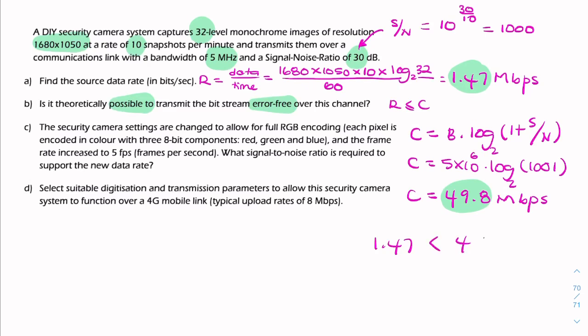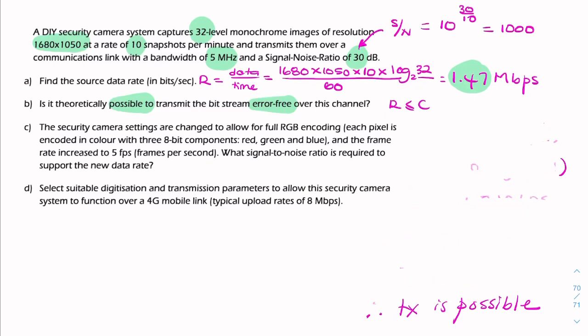So 50 is bigger than 1.47 or we can say 1.47 is less than 49.8. R less than C, therefore transmission is possible. So is it theoretically possible to transmit the bit stream error free? Yes it is possible because the data rate is less than the channel capacity.